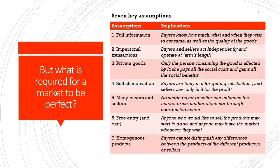The sixth assumption is free entry and exit. Anyone who likes to sell products can start to do so, and anyone who wants to leave the market can do so. There are no restrictions on who can or cannot enter the marketplace, particularly for sellers. There is no licensing or regulation by any authority that can bar a seller's entry. Sellers remain in the market as long as they can earn profits, and are free to exit if they cannot.